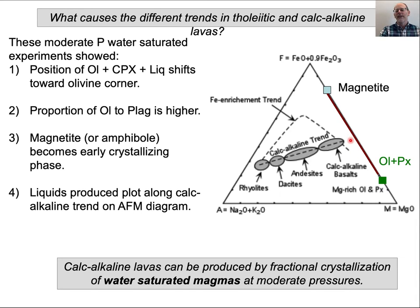So if the average precipitate composition were over here, the trend would go off in the iron enrichment direction. If it were just magnetite, it would drive compositions down in this direction. A combination centered around 50-50 would drive the calc-alkaline trend that we observe.